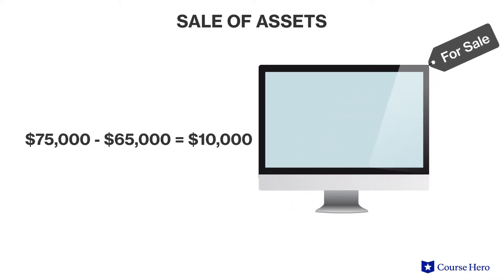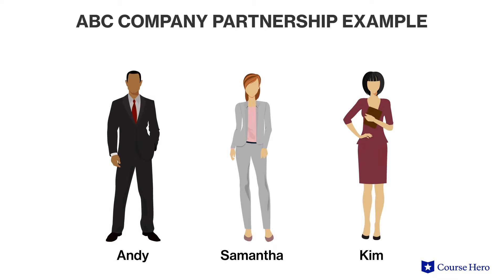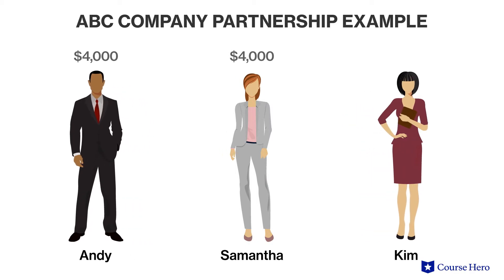Step one is the sale or realization of assets. Suppose the partnership sells the non-cash assets for seventy-five thousand dollars, creating a gain of ten thousand dollars (seventy-five thousand minus sixty-five thousand). Step two is the division of gains: the ten thousand dollar gain is allocated at forty percent, or four thousand dollars, to Andy and Samantha each, and twenty percent, or two thousand dollars, to Kim.